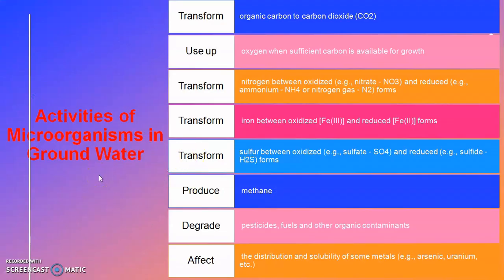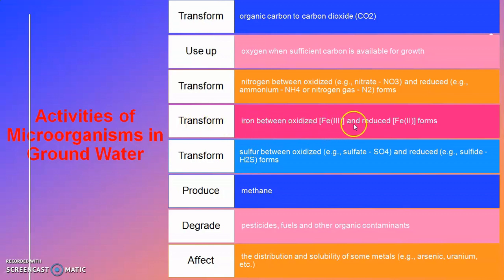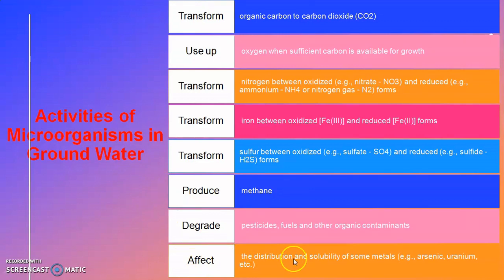These are the activities of microorganisms in groundwater: they transform organic carbon to carbon dioxide; they use oxygen when sufficient carbon is available for growth; they transform nitrogen between oxidized and reduced forms; they transform iron between Fe3+ and Fe2+ forms; they transform sulfur between oxidized sulfate and reduced forms; they produce methane; they degrade pesticides, fuels, and other organic contaminants; and they affect the distribution and solubility of metals such as arsenic and uranium.